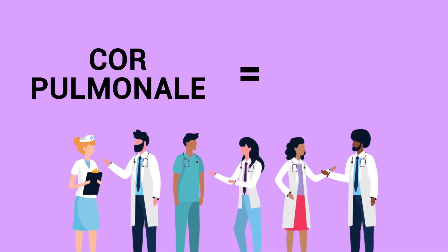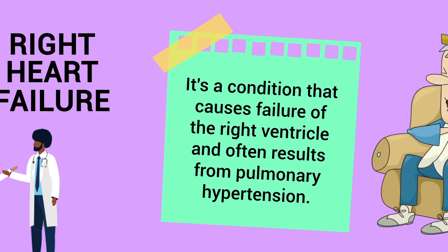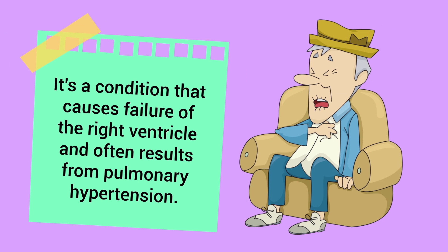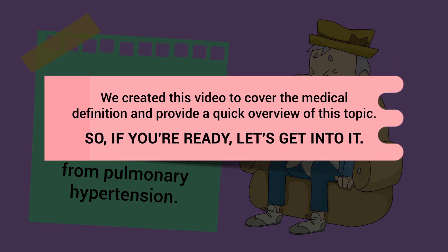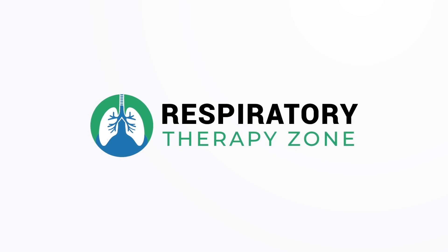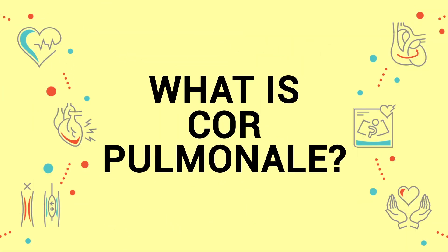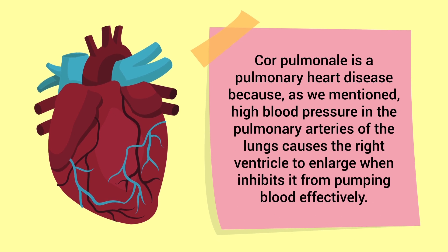Cor pulmonale, often known as right heart failure, is a condition that causes failure of the right ventricle and often results from pulmonary hypertension. We created this video to cover the medical definition and provide a quick overview of this topic.